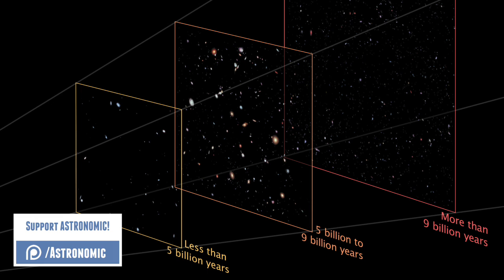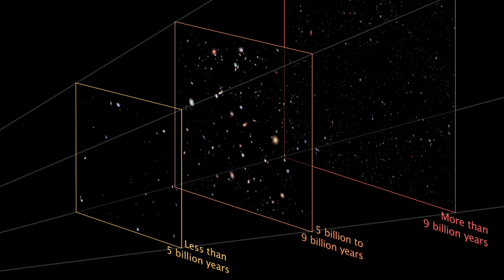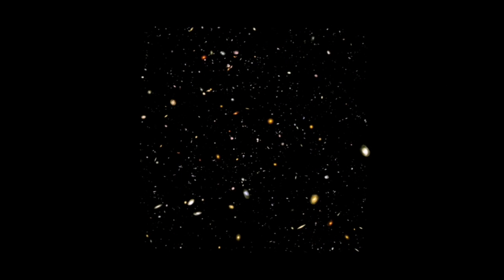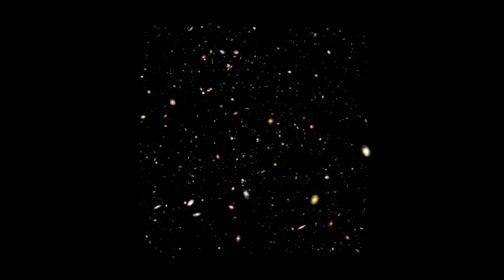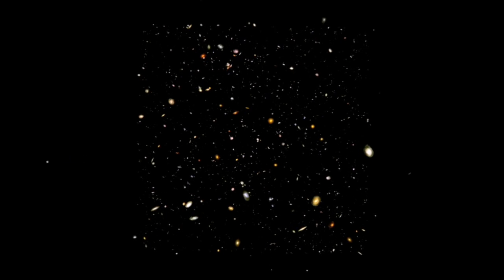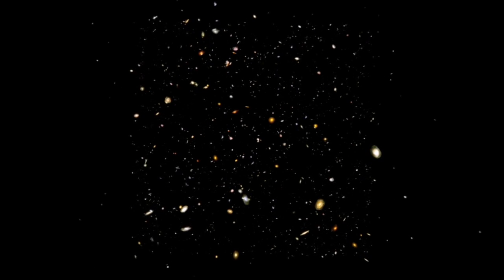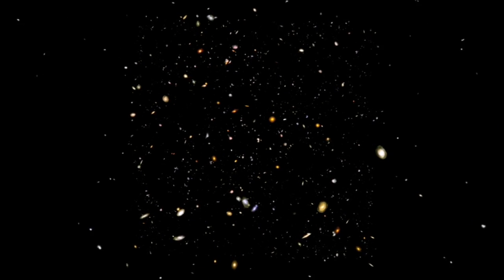Distances between objects were much shorter back then, but the universe was still homogeneous and isotropic. Wherever you look in the early universe, you would see a homogeneous and even distribution of matter and energy around you. The expansion of the universe is manifested only in the stretching of space itself. These distances expand in all directions equally, and so cannot be traced back to a single point.